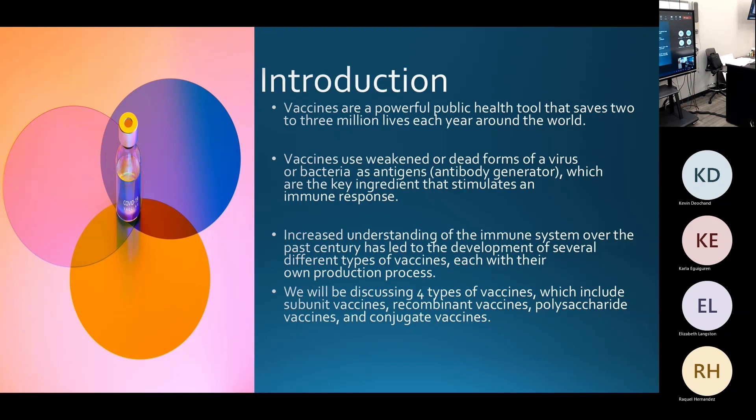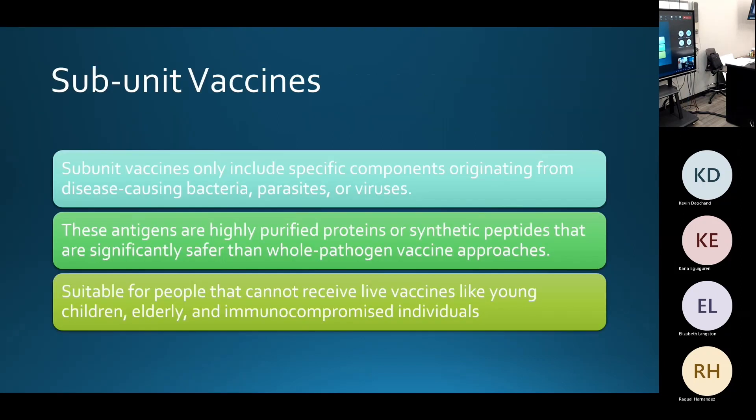Increased understanding of the immune system over the past century has led to the development of several different types of vaccines, each with their own production process. We will discuss the four types: subunit, recombinant, polysaccharide, and conjugate vaccines. And now I'm going to send it over to Elizabeth.